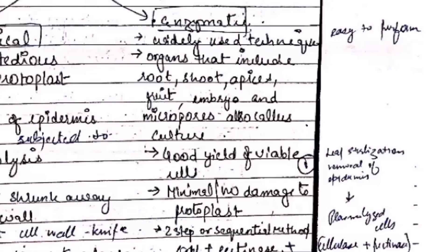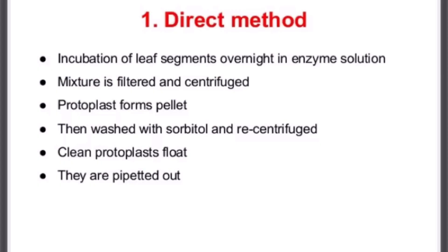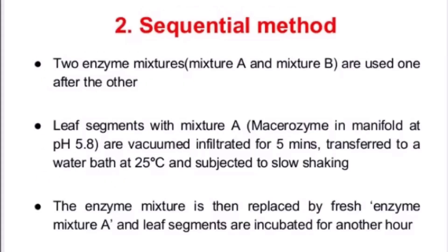The next method is the enzymatic method, which is the most widely used technique because it is easy to perform. It can be applied to organs like root, shoot, fruit, embryo, and callus cultures. The enzymatic method involves two types: direct (one-step) and sequential (two-step indirect). In the direct method, the leaf segment is incubated and then centrifuged — the protoplast forms a pellet, is washed with sorbitol, centrifuged again, and the clean protoplast floats and is pipetted out.